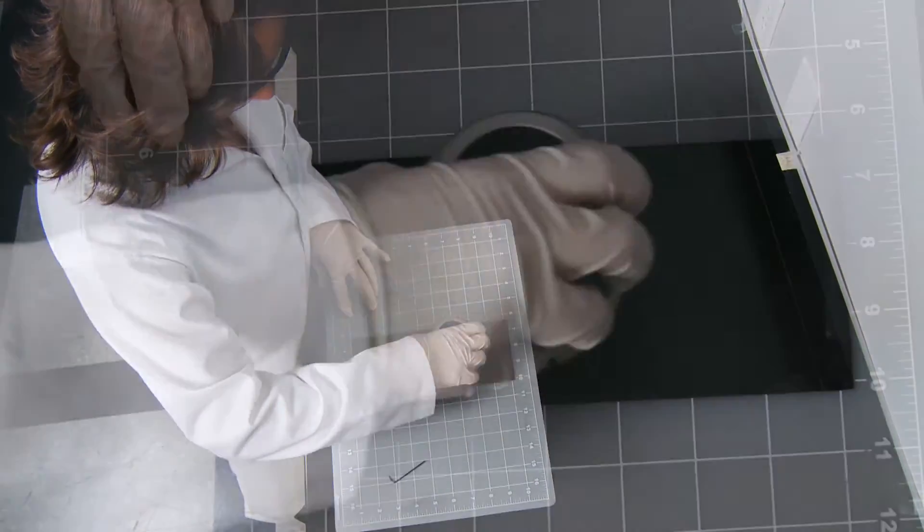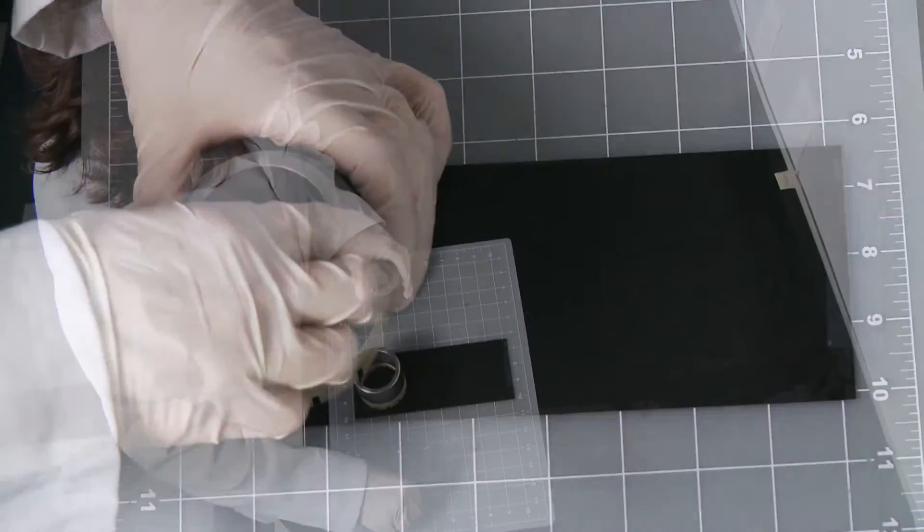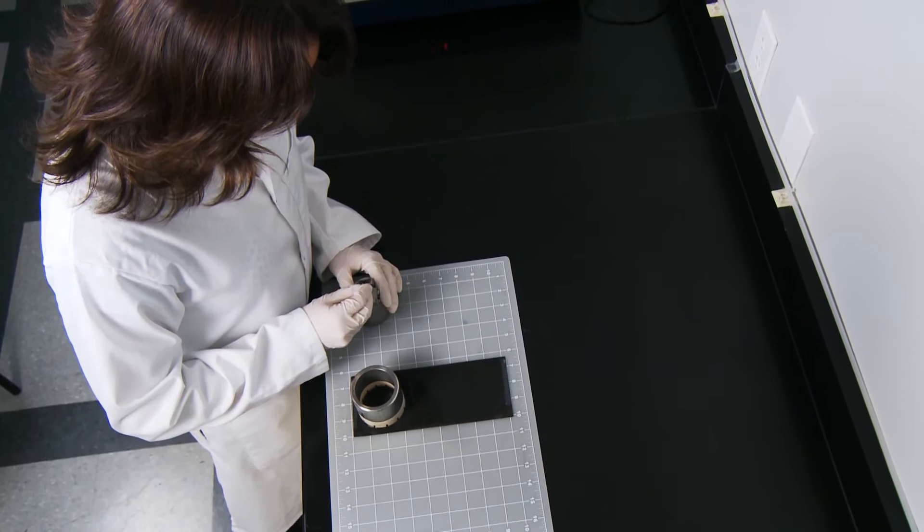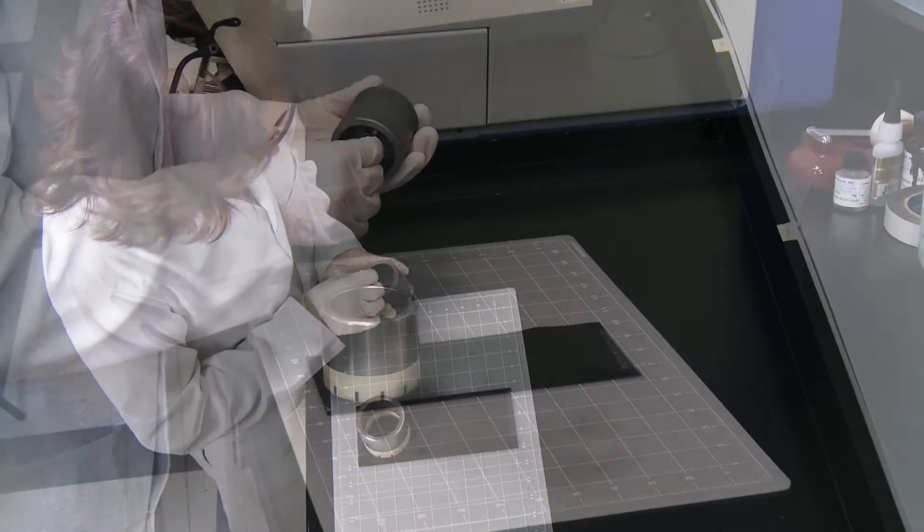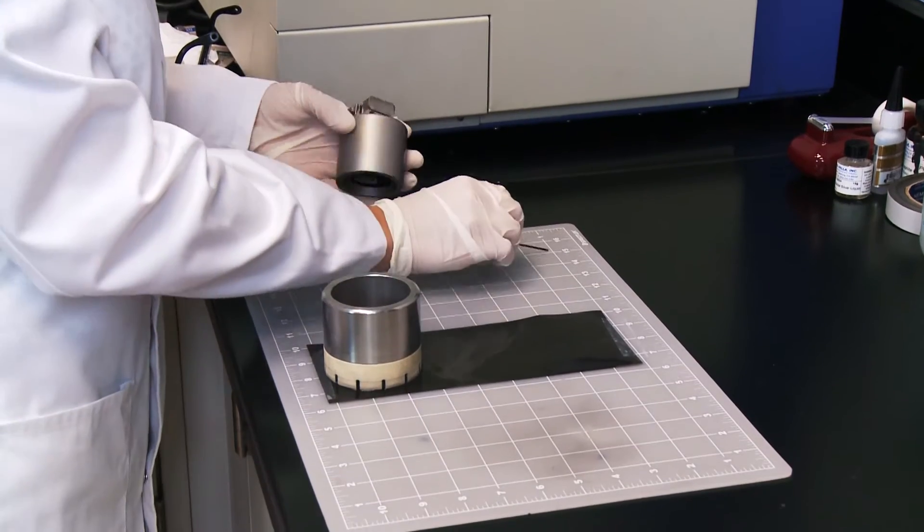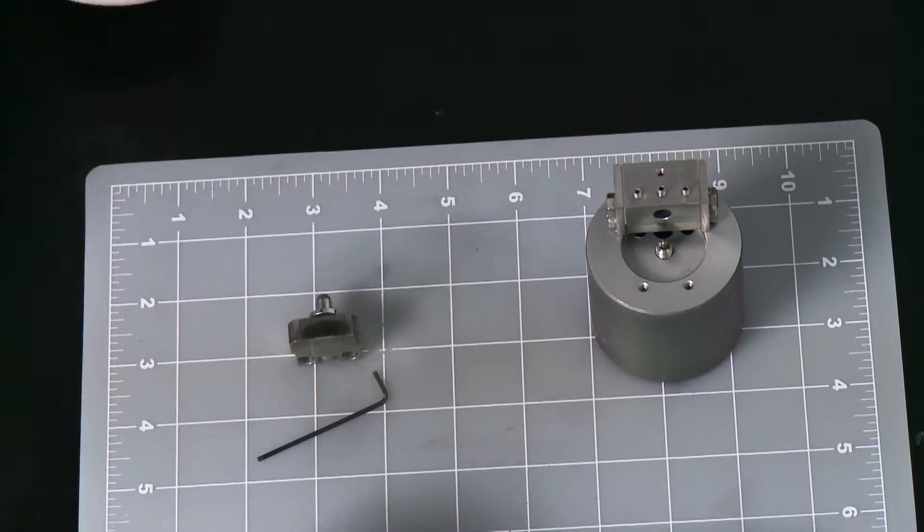To enhance end pointing precision, the same compatible sample mount holder that is used when polishing with the Maruto can be used for ion milling and also EM inspection. By eliminating the need to change mounts during preparation, milling, and from one instrument to the other, makes preparing cross sections with a specific area of interest more precise.